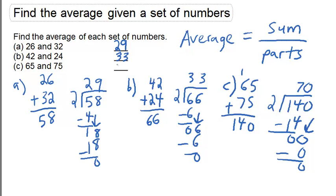So the key takeaway is that average is equal to the sum of the set of numbers divided by the number of parts.